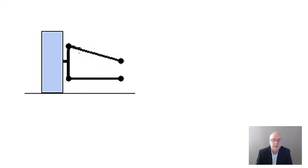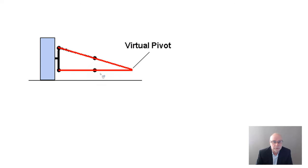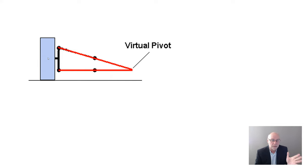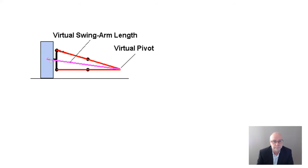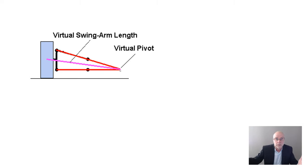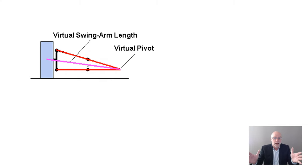It's not immediately visually obvious what happens. But if we extend these wishbones, we reach a virtual point — that's the point around which the suspension is virtually moving. It's exactly as if we had a single swing arm going from this point to the middle of the tyre. Here, drawn in purple, is the virtual swing arm length — it acts as if it's an actual swing arm pivoting around that point. The length of the swing arm, whether virtual or real, determines the camber change that occurs during bump.